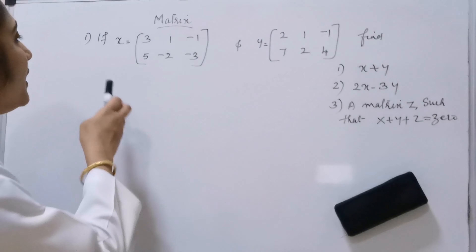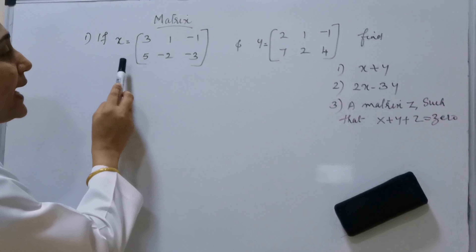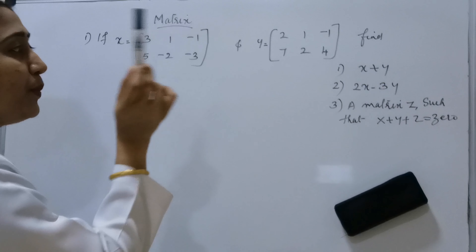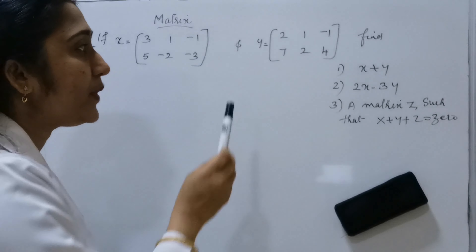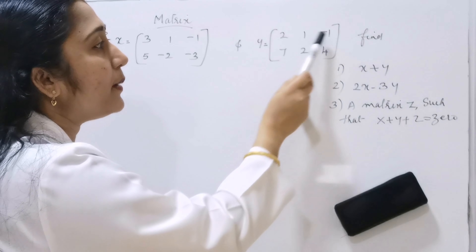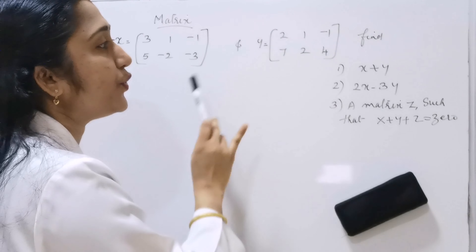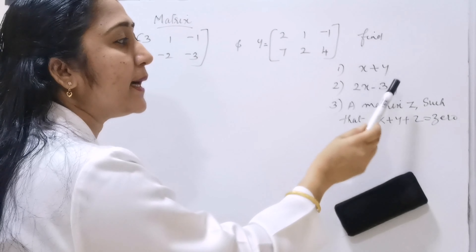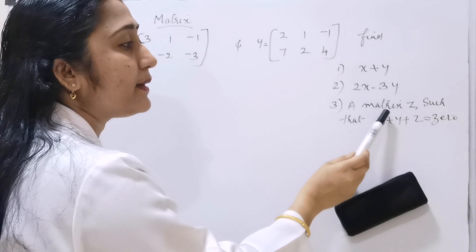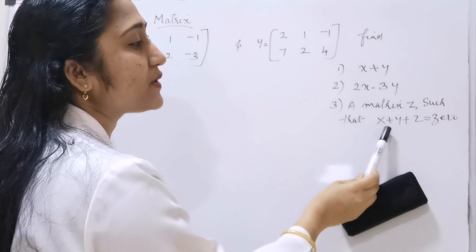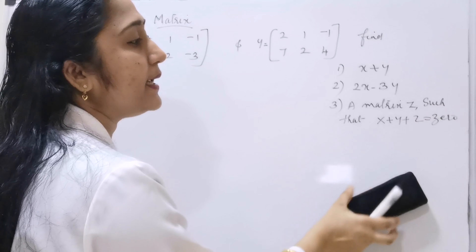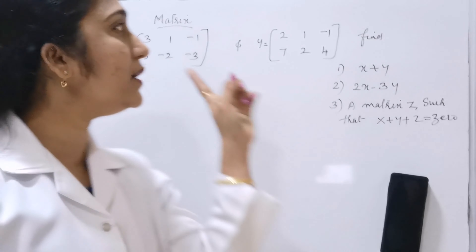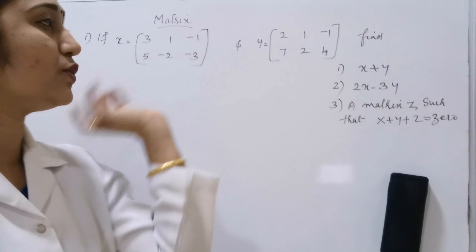Today's problem: X is equal to the matrix [3, 1, -1; 5, -2, -3] and Y is equal to [2, 1, -1; 7, 2, 4]. We have to find: first, X plus Y; second, 2X minus 3Y; and third, a matrix Z such that X plus Y plus Z is equal to 0. We have to solve these 3 problems based on these two matrices.